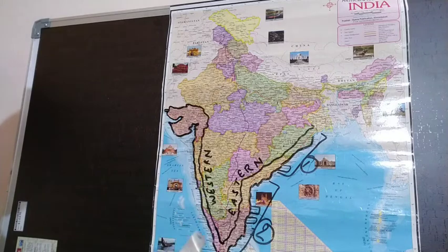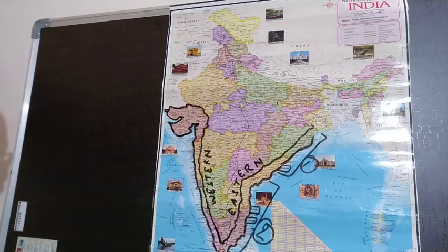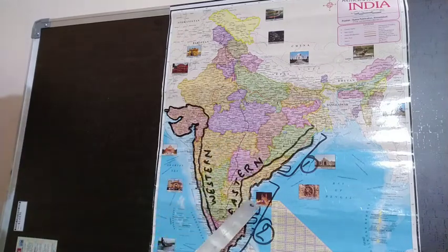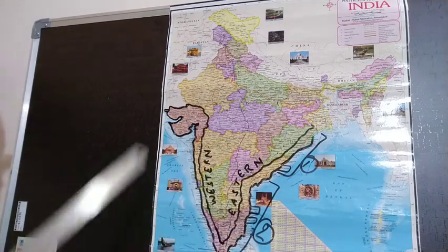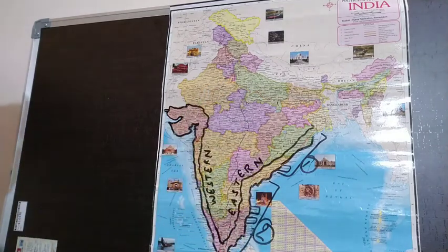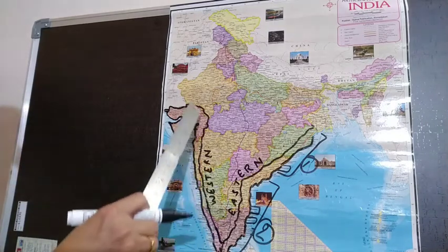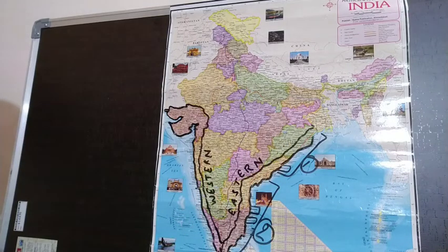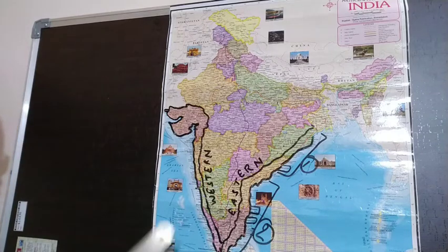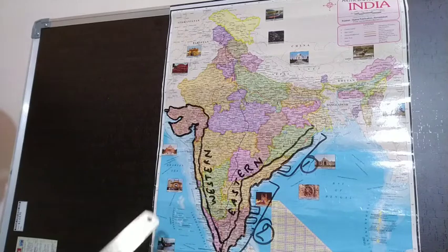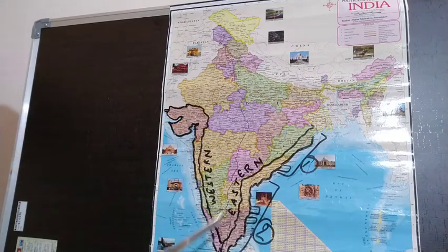The climate is mild because these coasts lie on the shore of the Arabian Sea and the Bay of Bengal. The western and eastern coastal plains meet at Kanyakumari — also known as Cape Comorin. These coastal areas provide us cash crops such as coconut and rubber, and plenty of fish.